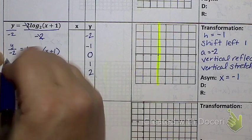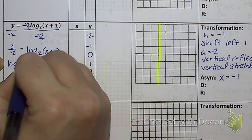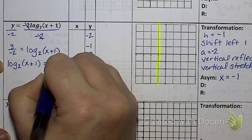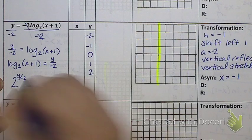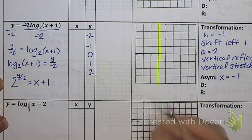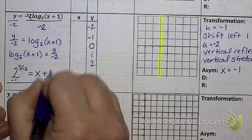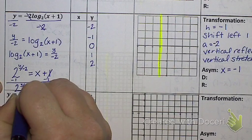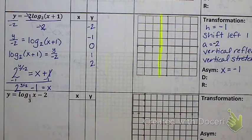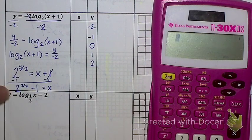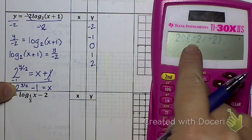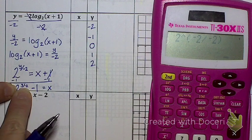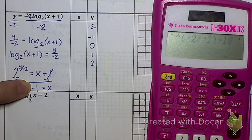That gives me Y over negative 2. You could also call that negative 1 half Y, if you wanted to. Equals log base 2 of X plus 1. Is my log by itself? So I'm ready to go to exponential form. Now remember, if this is confusing for you this way, write the log on the left. Sometimes just flipping it around like that makes it a lot clearer for people. So what's my base? 2. What's my exponent? Y over negative 2. That's the exponent. Equals X plus 1. So what am I going to do? Subtract 1. So I have 2 to the Y over negative 2 minus 1 equals X.